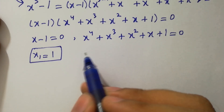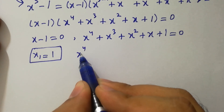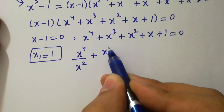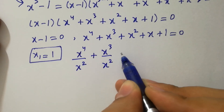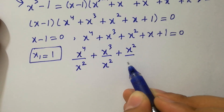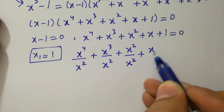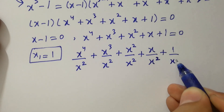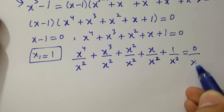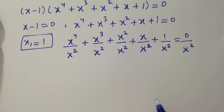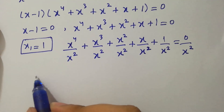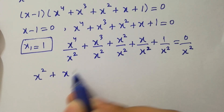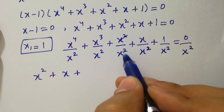Next, simplify the second factor. Divide both sides by x squared: x squared over x squared plus x cubed over x squared plus x squared over x squared plus x over x squared plus 1 over x squared equals 0. This gives x squared plus x plus 1 plus 1 over x plus 1 over x squared equals 0.